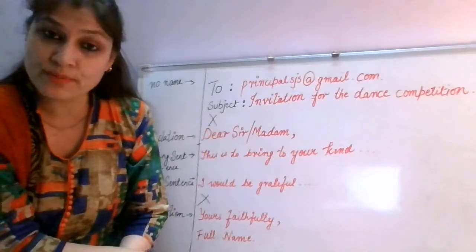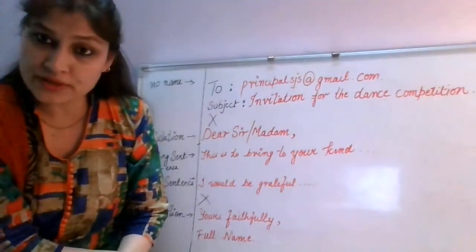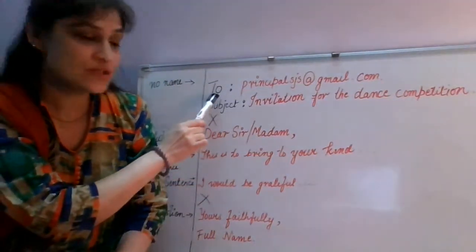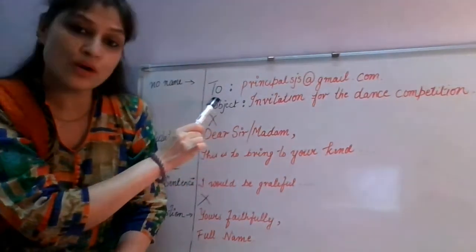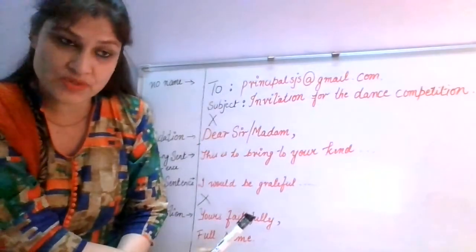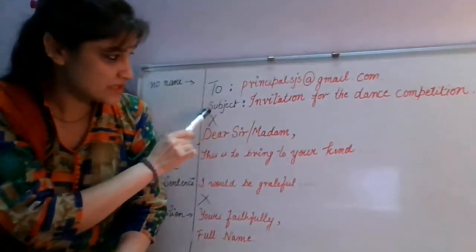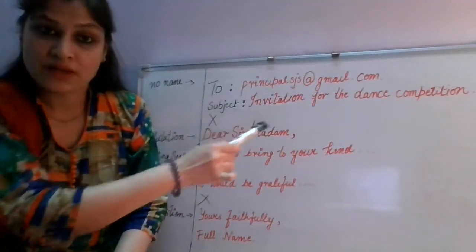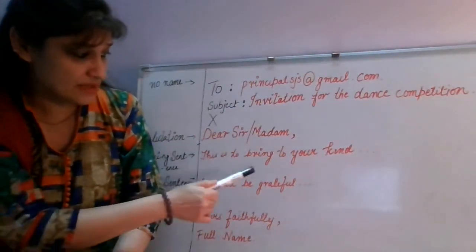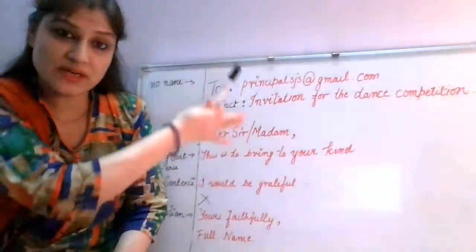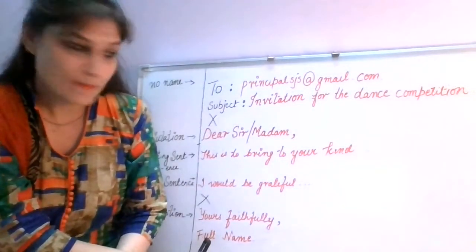Once you've written all the details, in the next paragraph write the closing sentence, then your subscription. This is the permanent format of your email. Remember: do not write 'From' — it is always 'To' and 'Subject.' Avoid writing 'To, From' — that is not accepted. It has to be 'To,' then 'Subject' with a colon, then the email address, then the subject line.